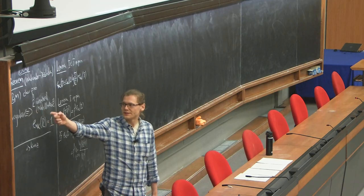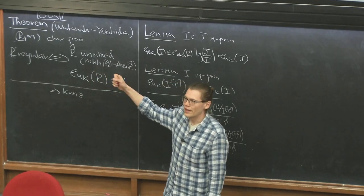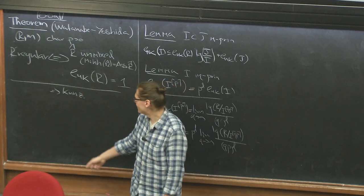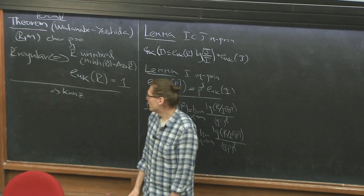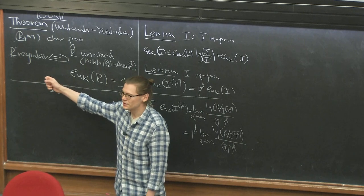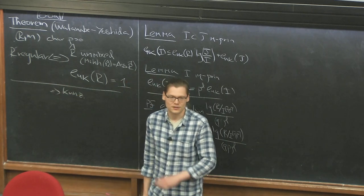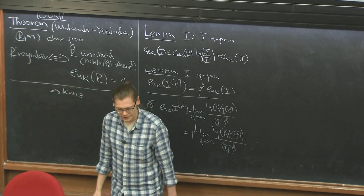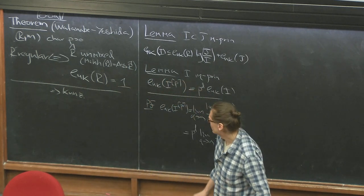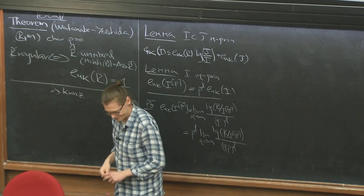Formally unmixed means that the ring is equidimensional and there are no embedded components for the completion. One direction is not hard, but it's already done due to Kunz. We discussed that if a ring is regular, then the Hilbert-Kunz function is identically 1. We will work to prove the other direction.